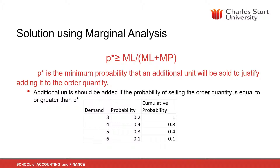The information we've got in the Yogi Yogurt example is that the cost of making the yogurt cases is $40 and the selling price is $100. So the marginal loss, if we don't sell an additional unit, is going to be $40. And the marginal profit, if we do sell an additional unit, is going to be $60.